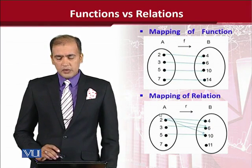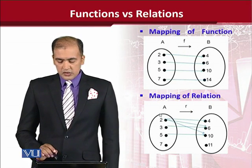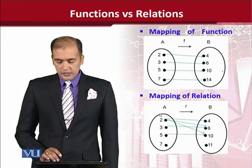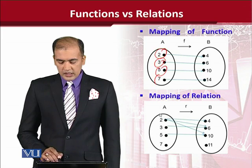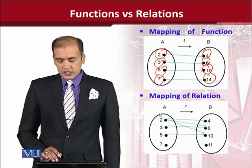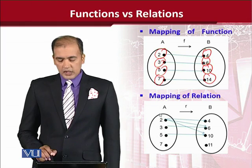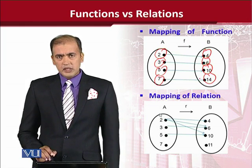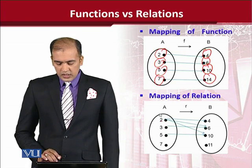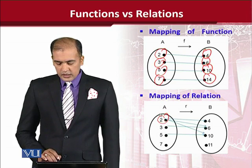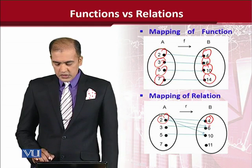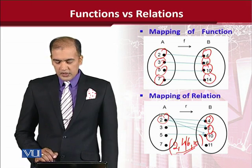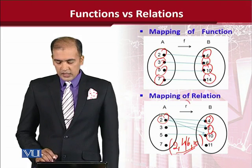The mapping of a function is also used to differentiate between a function and a relation. A diagram shows the map of a function where for each value of x there is exactly one value of y — no value of x creates two values of y. These are denoted with sets a and b, and f shows the function, so there is a one-to-one correspondence. Whereas in a relation, the element 2 of set a gives rise to 4, 6, and 10. So 2 is mapping to multiple values, which means it is definitely not a function — we say that a has a relation with b.